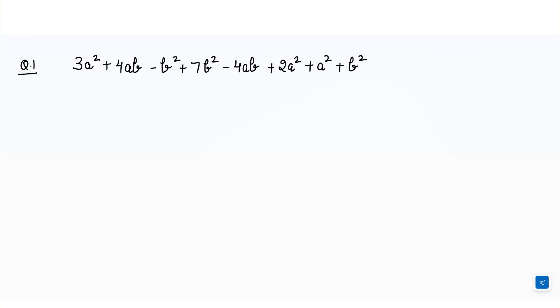For example, if I write here a, 2a, 5a, they are like terms because they have same variable a. Similarly, a square, 2a square, 7a square. These are like terms because the variable is a square in all the terms.